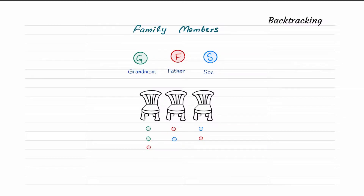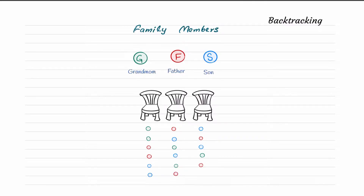There could be the possibility that father comes and sits on the first chair, grandmom on the second chair, and son on the third chair. There could also be the possibility that son comes and sits on the first chair, with grandmom or father on the second chair. Here you can see we have found all possible sitting arrangements, which are six.